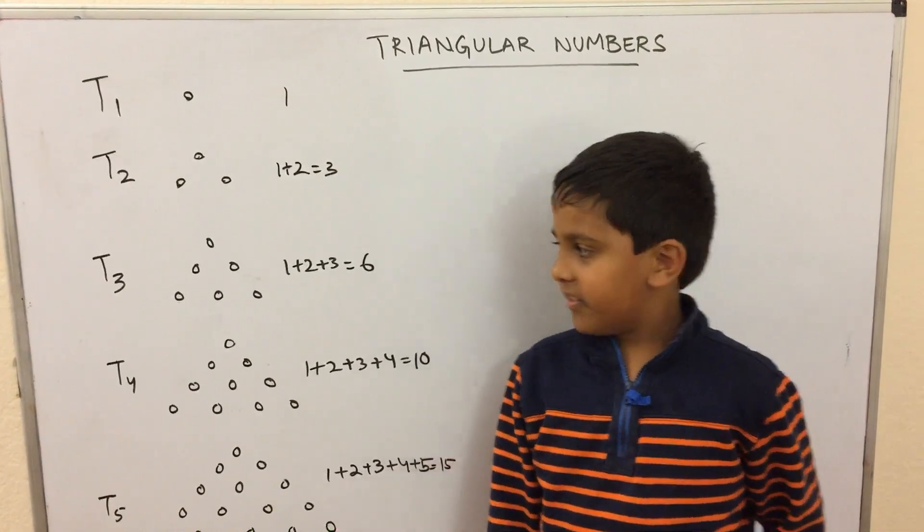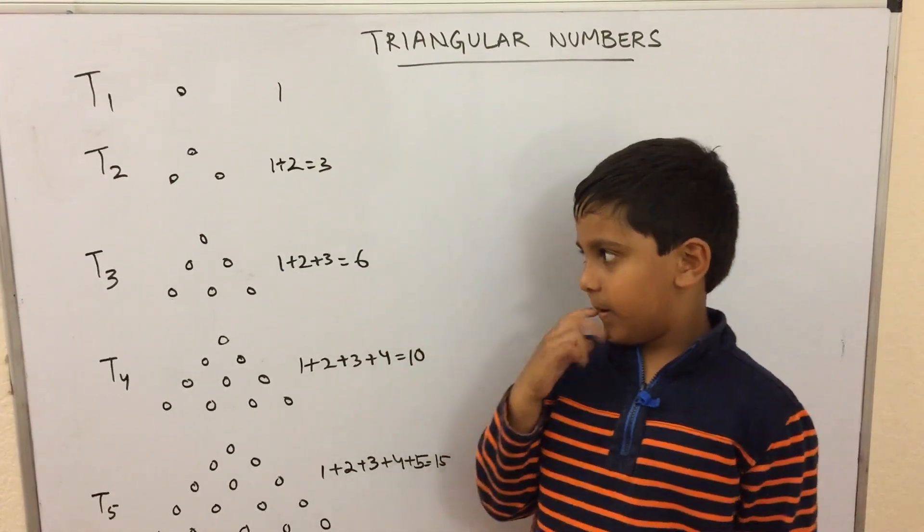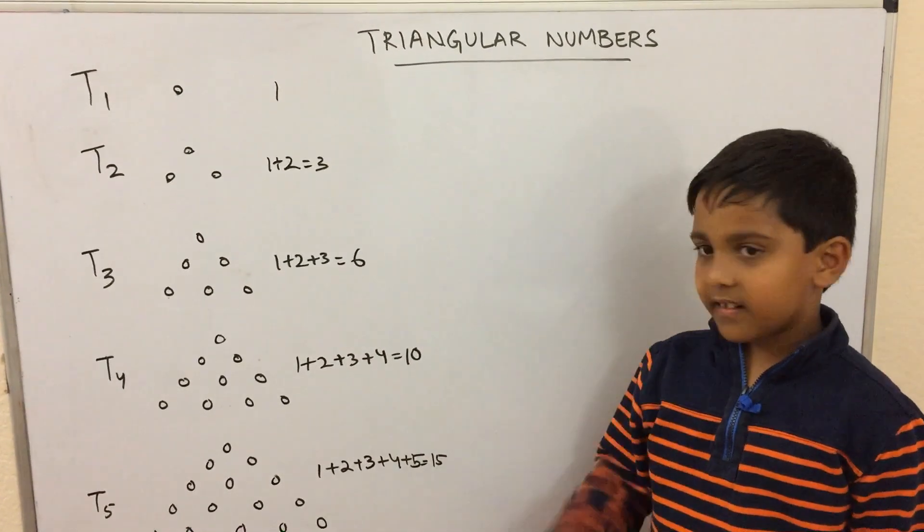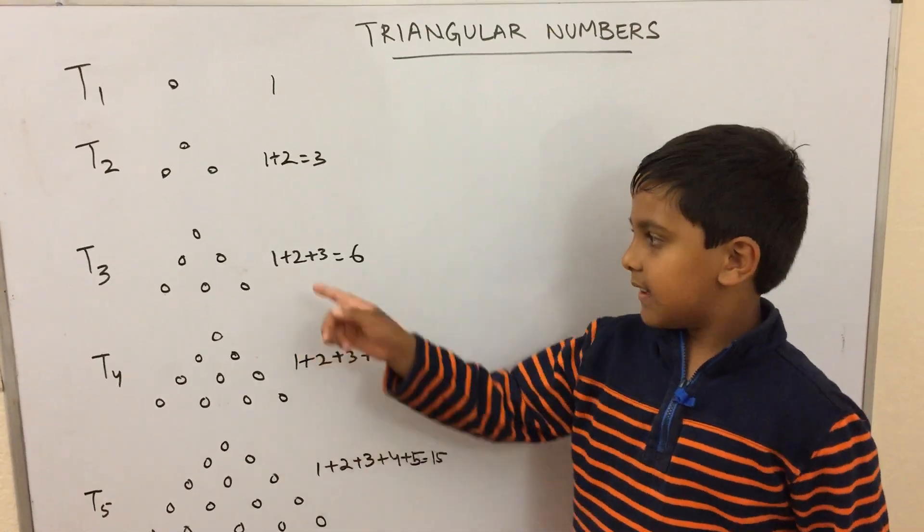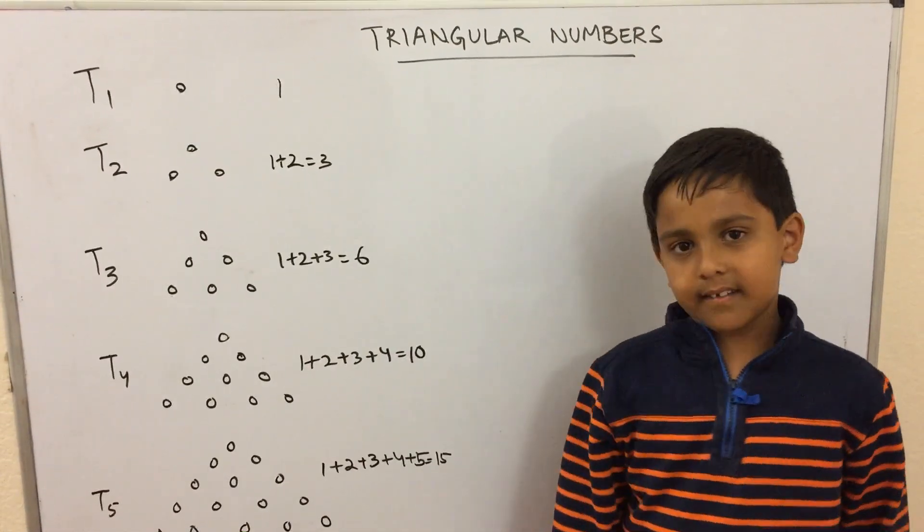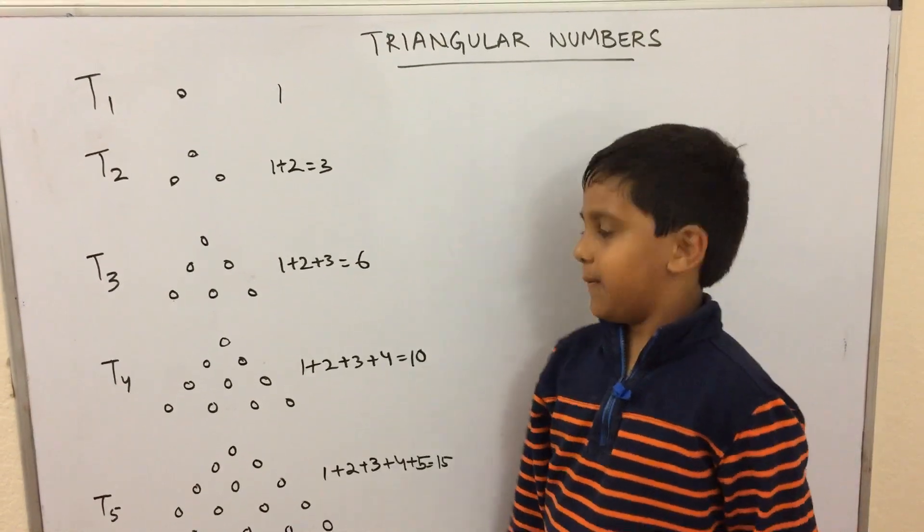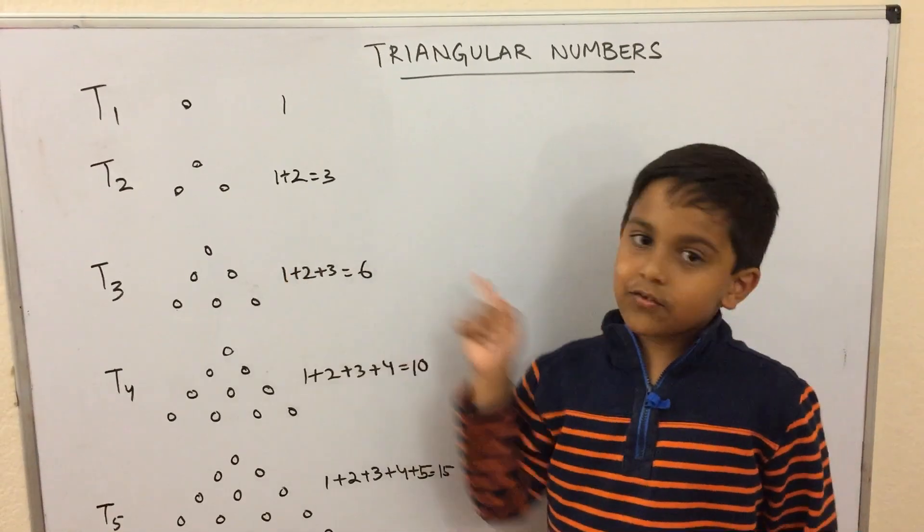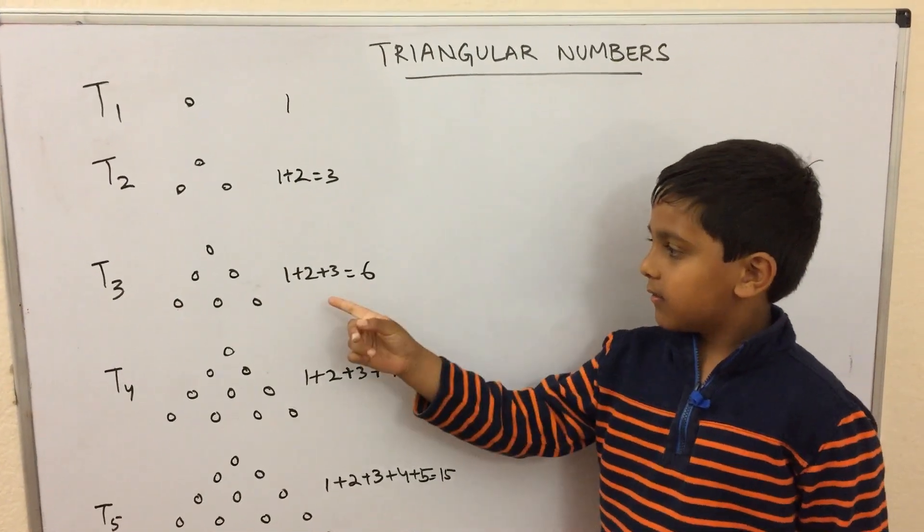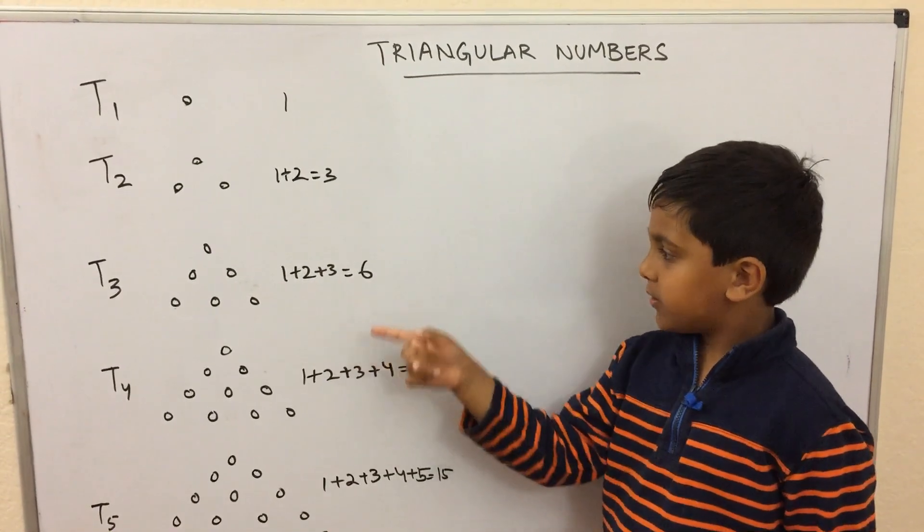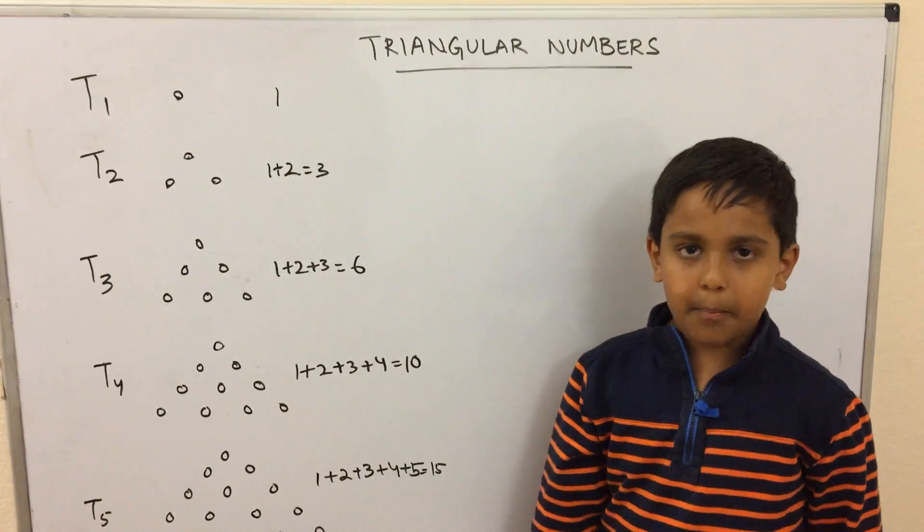So for example, the third triangular number is the number of objects needed to form this equilateral triangle where each side has length 3. So the first row has 1, the second row has 2, and the third row has 3. So it's 1 plus 2 plus 3 which is 6, the third triangular number.